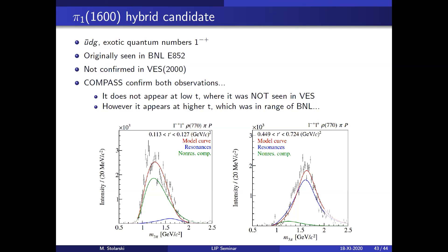The last topic: an exotic state with quantum numbers corresponding to a quark-antiquark-gluon hybrid was seen by the E852 experiment at BNL in 1998 but not confirmed by VES. COMPASS did both experiments effectively — at low t we do not see it (consistent with VES), while at high t we need an additional component to describe the data, which may indicate the exotic state exists.